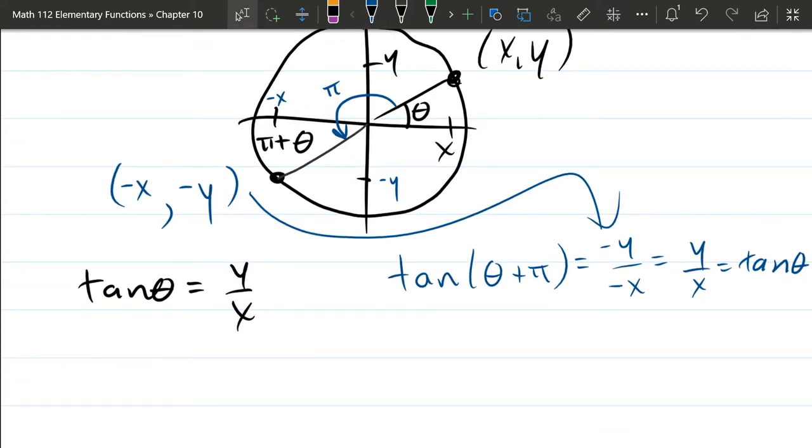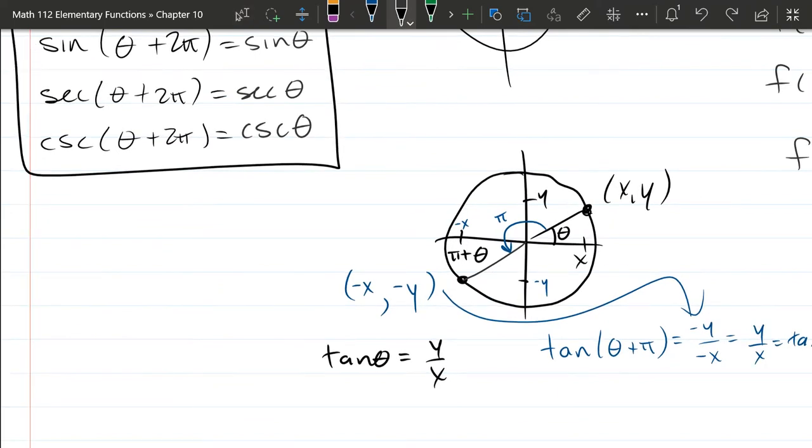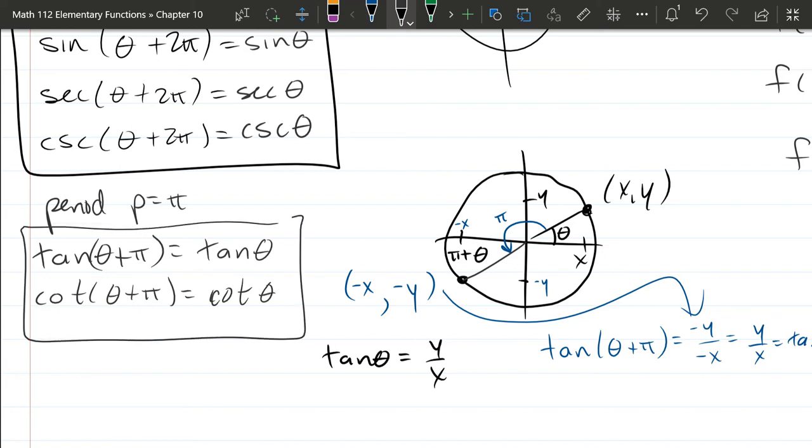Cotangent is the reciprocal of tangent, and it behaves the same way. You're just going to swap the, instead of y over x, it's x over y. But you get that same double negative cancellation in your division. So we'll write below here. So period P is regular π for tangent theta plus π equals just tangent theta. And cotangent theta plus π equals cotangent theta. And those are the periodic properties of these trig functions.